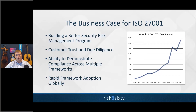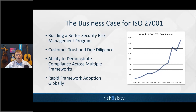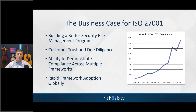ISO 27001 also allows you to consume other frameworks — a unique characteristic versus other frameworks out there. On top of that, it's a competitive advantage. We're seeing organizations not just in the US but across the world pursuing ISO 27001 because stakeholder concern with data security is growing. Unless you've lived under a rock in the last five years, you've heard about security and privacy in the news, big businesses being breached, things like the credit bureau breach. Companies are looking for a way to manage that risk and tell the world they've done so — that's why we're seeing rapid adoption across the globe.